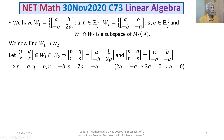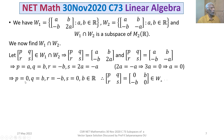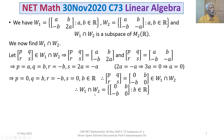From W1 we get S = 2A, and from W2 we get S = -A. Therefore 2A = -A, which implies 3A = 0, so A = 0. Going back: P = 0, Q = B, R = -B, S = 0, where B is arbitrary in R. Therefore the matrix [P, Q; R, S] is of the form [0, B; -B, 0].